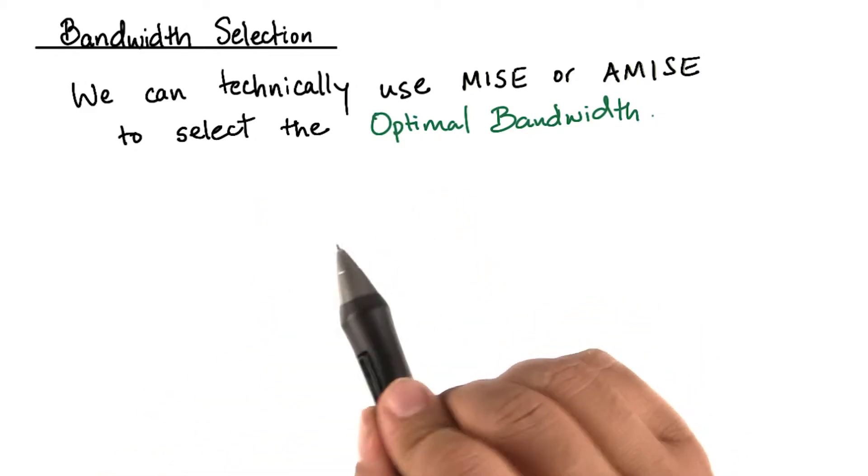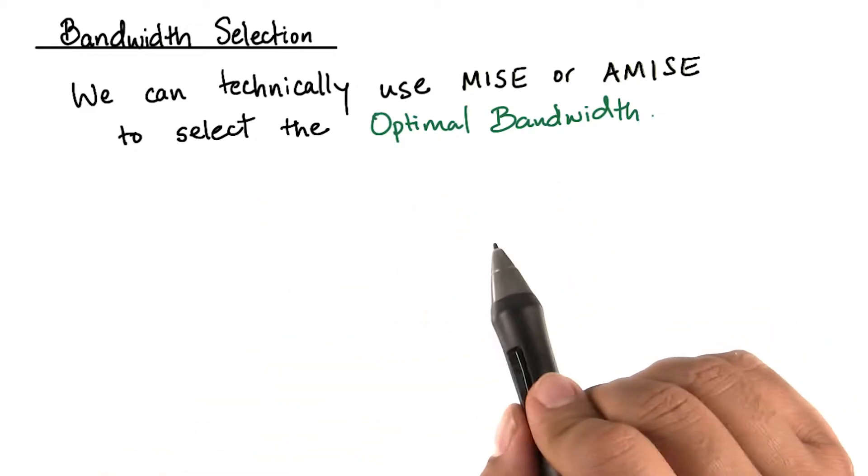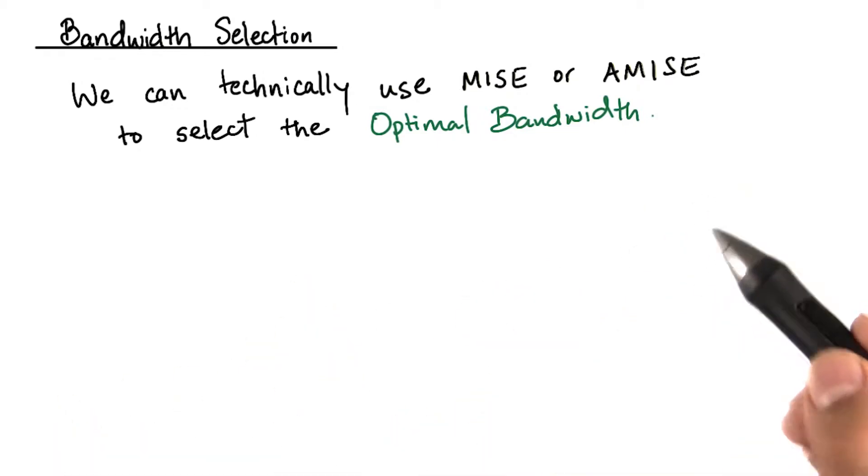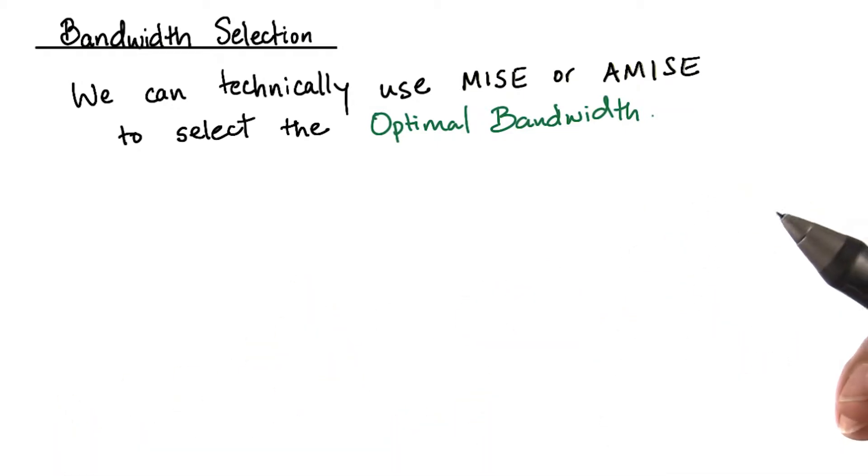We can technically use the mean integrated square error, or AMISE, to select the optimal bandwidth for a kernel density estimation. However, for general kernels, this is very difficult to estimate.